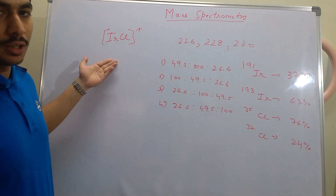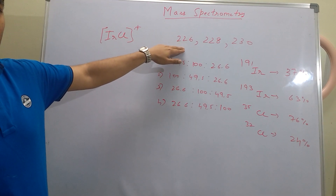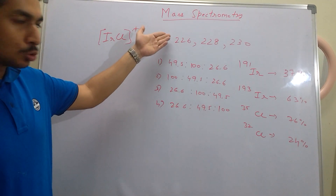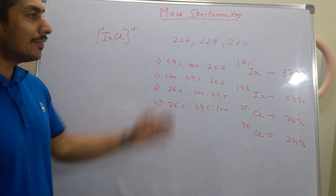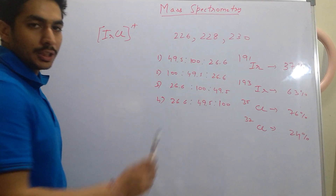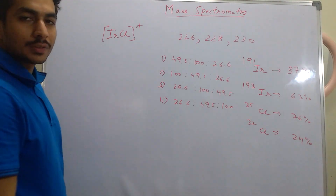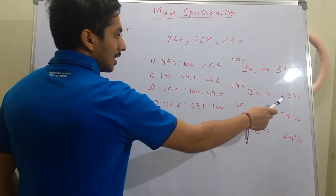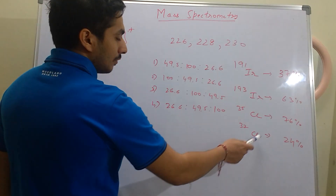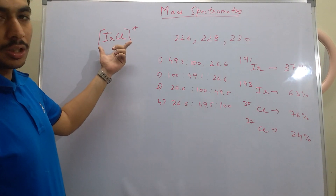We have been given an iridium chloride radical cation which shows peaks in mass spectrometry at m/z values of 226, 228, and 230 — mass by charge ratio, and since charge is one, that essentially means the mass. They ask for the relative intensities of these peaks. The isotope data given is: Ir-191 with 37% abundance, Ir-193 with 63% abundance, Cl-35 with 76% abundance, and Cl-37 with 24% abundance.